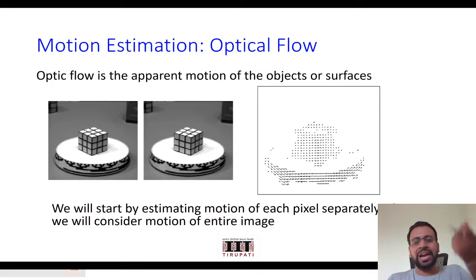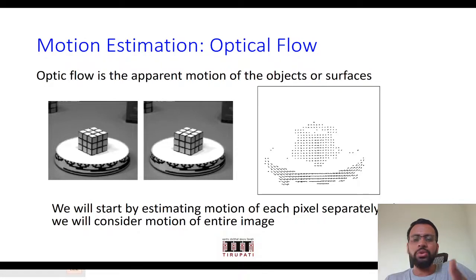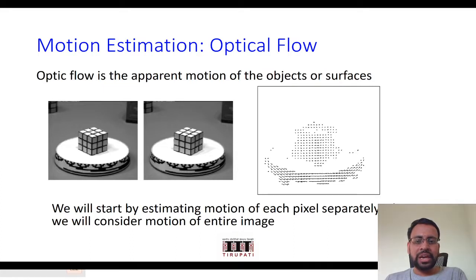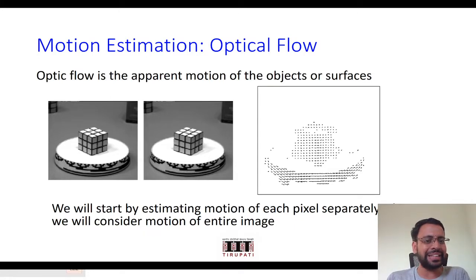A classical example from an early paper shows a dice placed on a rotating disc. If you compute the optical flow, which gives motion estimation at every pixel, you will see that in regions with uniform texture — like the white platform which looks like a cake — the motion field appears to be zero, because the brightness remains the same and there is no textural difference to detect any motion.